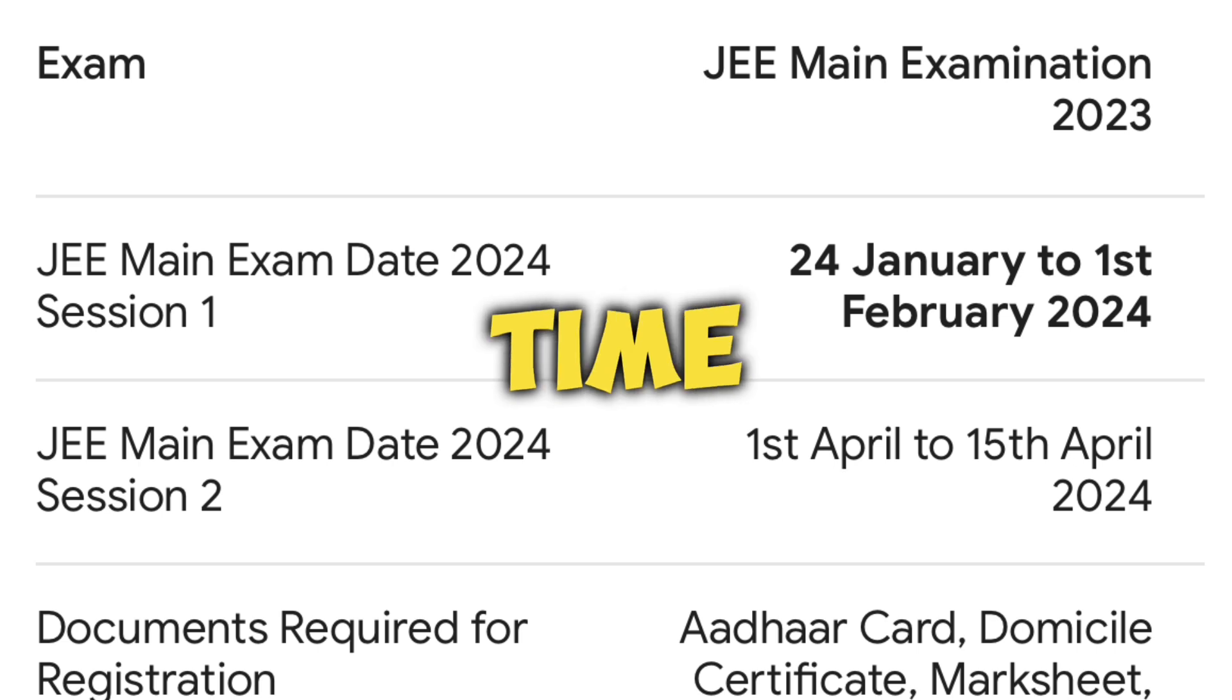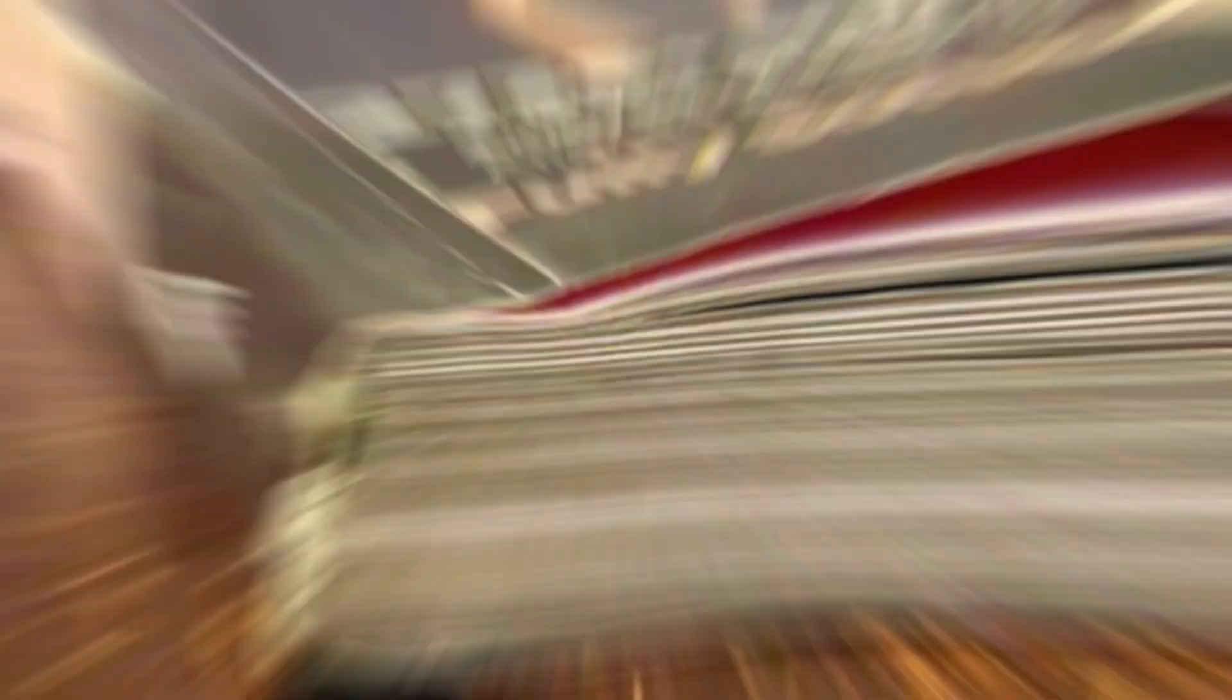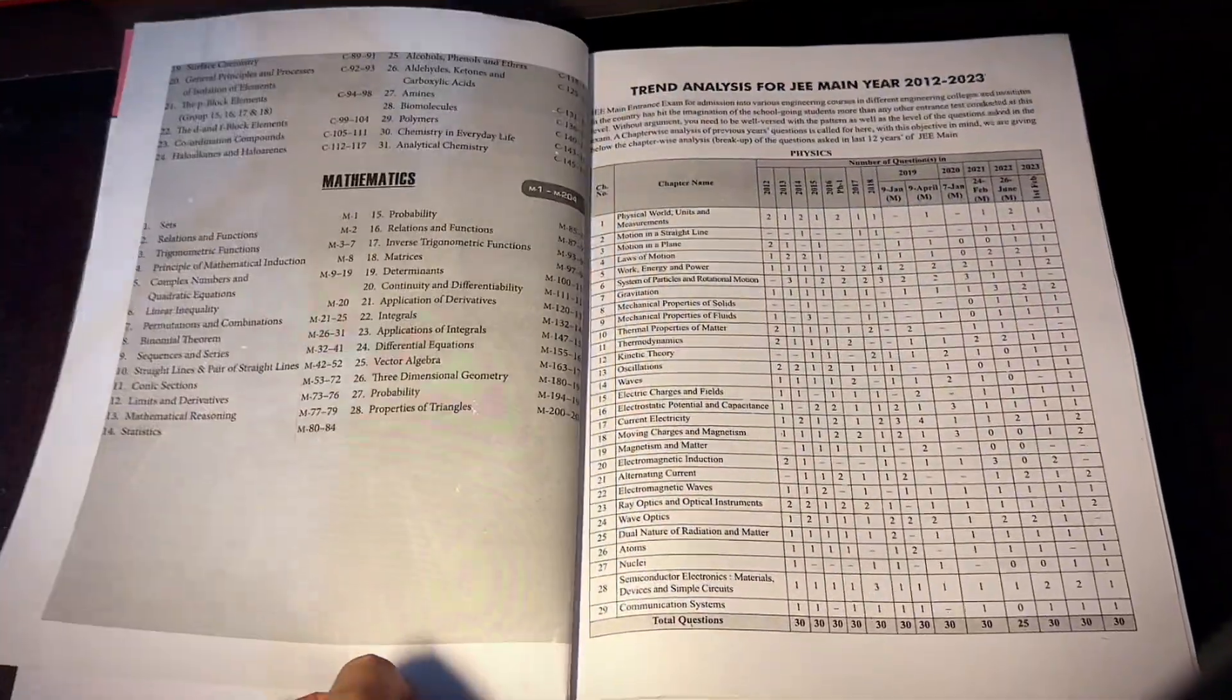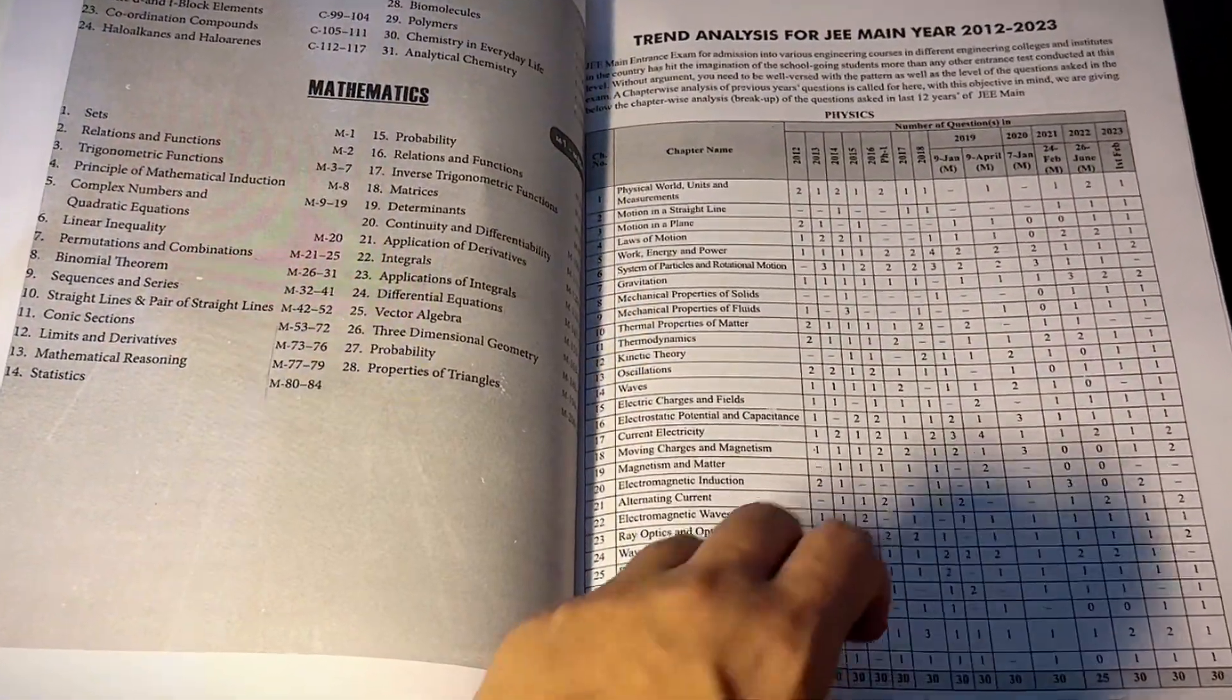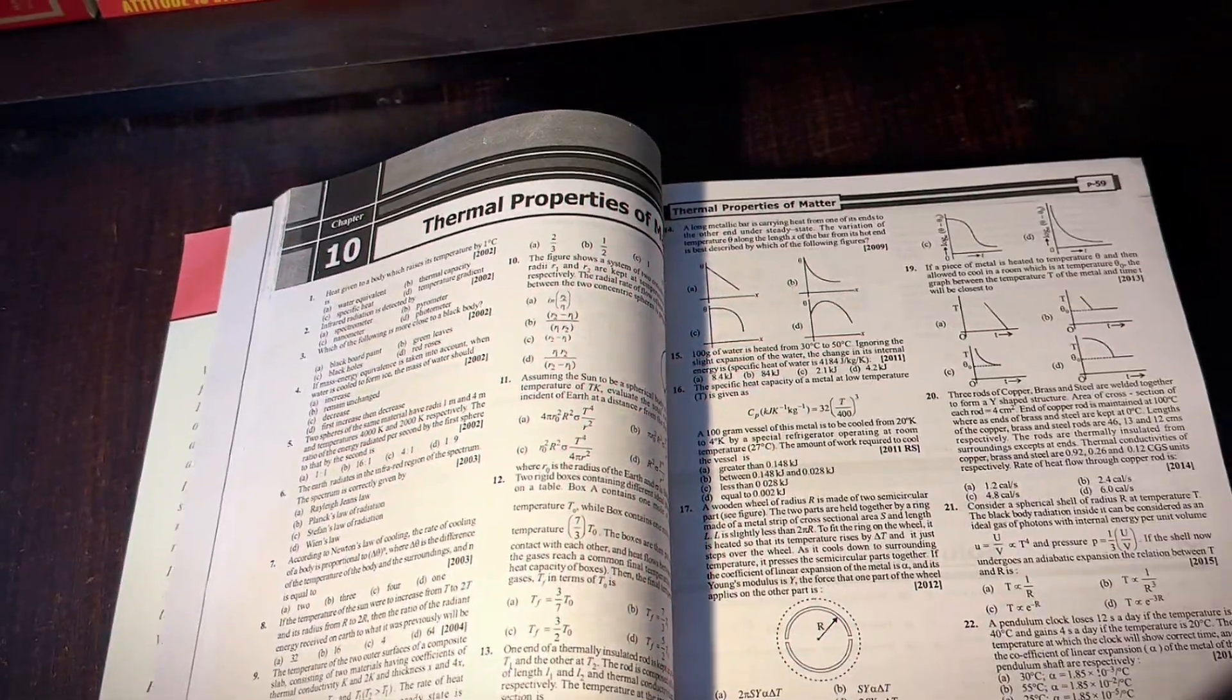Hello guys, as you know our JEE Main first attempt is coming near. So now it's time to solve some JEE Main previous year questions. So for this, Disha publication brings 22 years JEE Main topic-wise solved paper from 2002 to 2023. It contains 11 years of JEE Main 2013-2023 papers and past 11 years AIEEE solved papers.